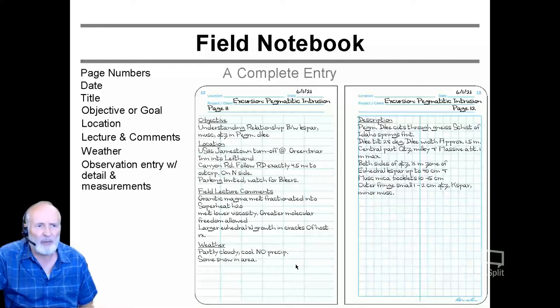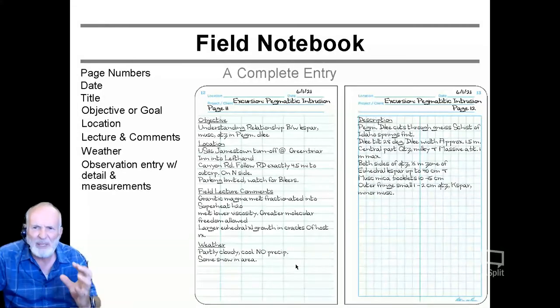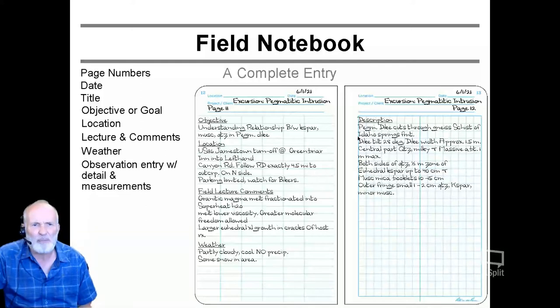Observations in your entry with detail and measurements whenever you can. Please give numeric values, something you have measured. Here's a description: pegmatite dike cut through mica schist of Idaho Springs formation. Dike till 28 degrees, dike width approximately 1.5 meter. Central part quartz milky to massive, about one meter maximum. Both sides of quartz, one half meter zone of euhedral K-spar up to 40 centimeters and muscovite mica booklets 10 to 15 centimeters. Outer fringe small one to two centimeter quartz, K-spar, minor muscovite.